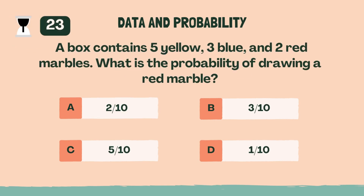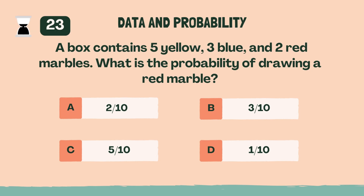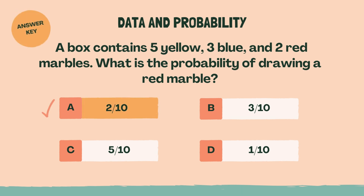A box contains 5 yellow, 3 blue, and 2 red marbles. What is the probability of drawing a red marble? A, 2 out of 10.